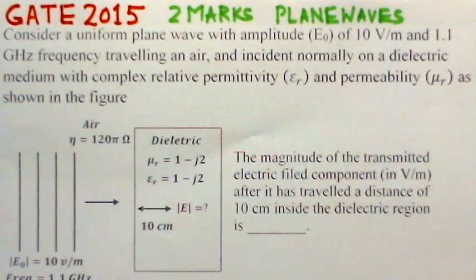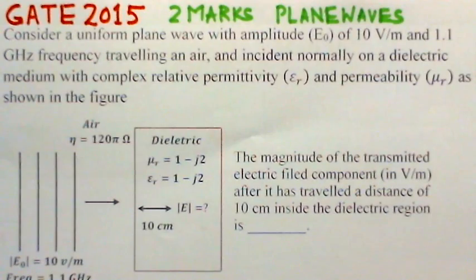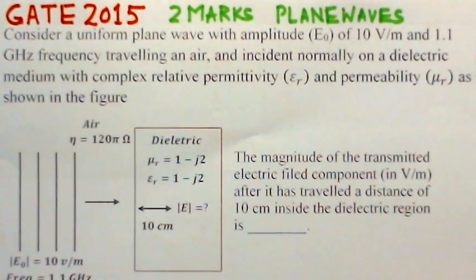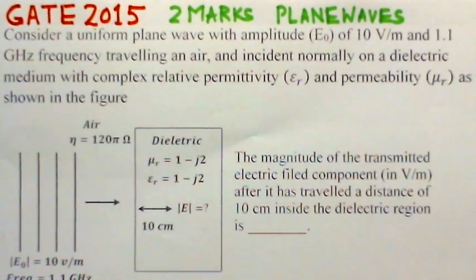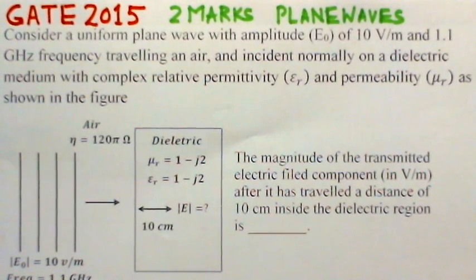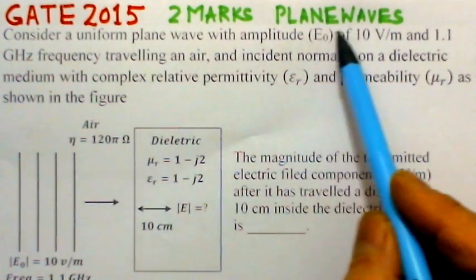Some typical problems which appeared in recent GATE examinations on plane wave propagation are taken up for video solution. A good number of problems have come in the examination during the last three years — 2014, 2015, and 2016 — on the topic of plane waves. The present problem considered is of the year 2015, worth two marks, on propagation of a plane wave in a dielectric at normal incidence.